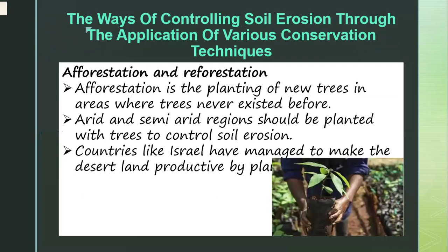The first method is afforestation and reforestation. Afforestation is defined as the planting of new trees in areas where trees never existed before. This is the first method you can use to conserve the soil, implying that you plant new trees where there were none. Arid and semi-arid regions should be planted with trees to control soil erosion.